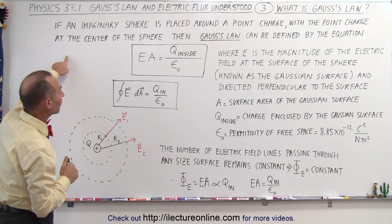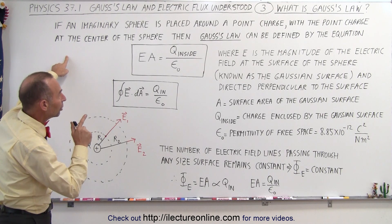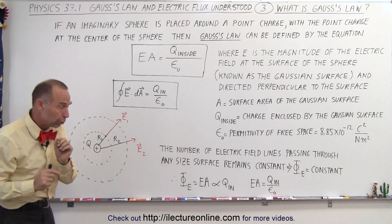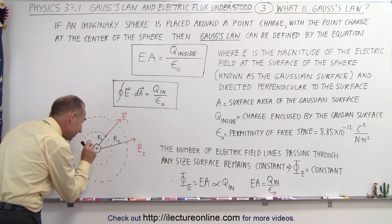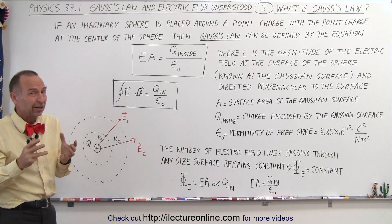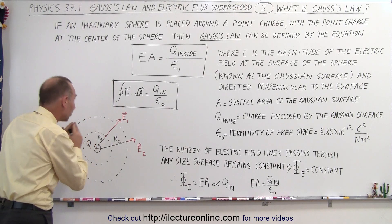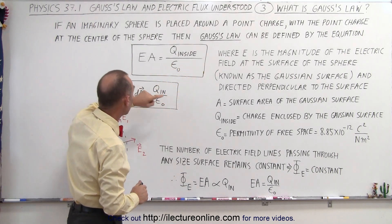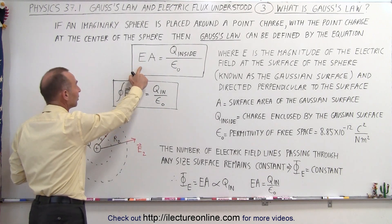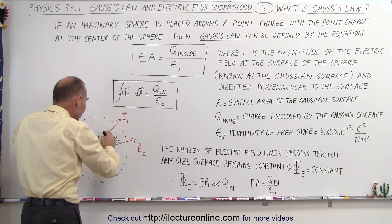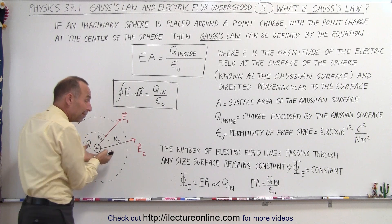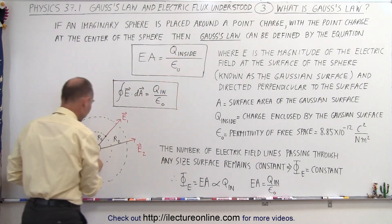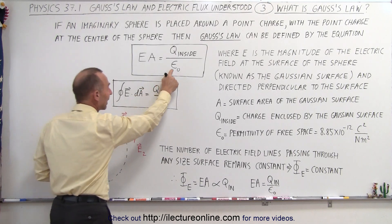Gauss's Law can be defined by the following equation. This is only true if the charge is placed right at the center of those spheres. If we place it at the center of the sphere, we can say that Gauss's Law is defined by the equation: the strength of the electric field times the area of the sphere — that imaginary sphere, the surface area of the sphere — is equal to the charge inside the sphere, Q, divided by epsilon sub nought.